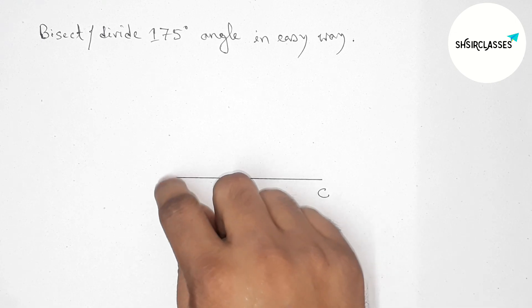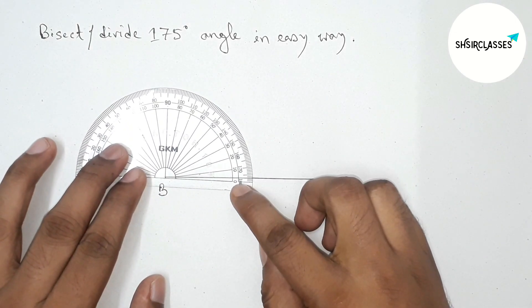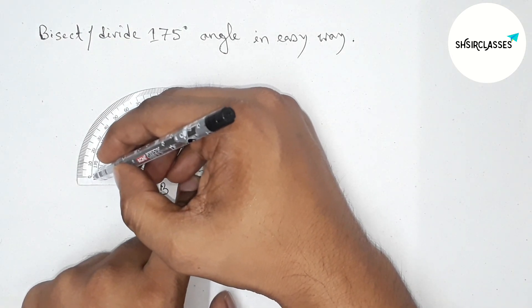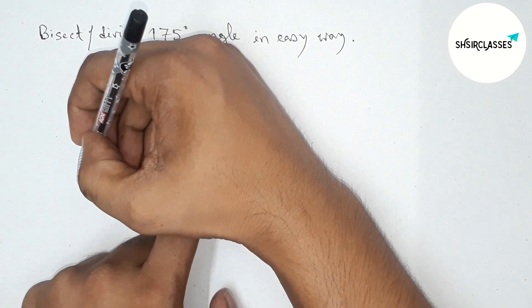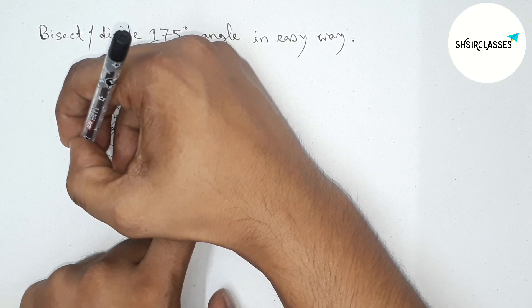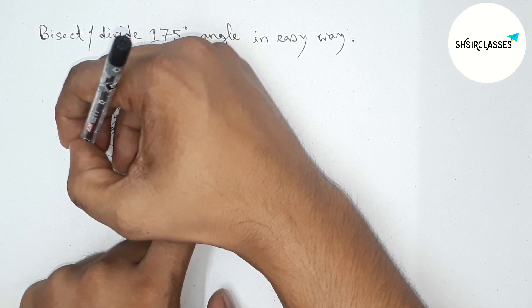Next, drawing 175 degree angle on the point B. So putting the protractor on the point B perfectly, then counting. So between 170 and 180, so this is 175 degree.